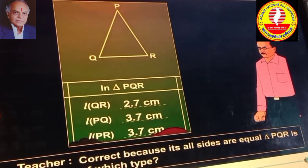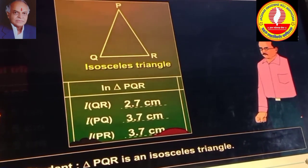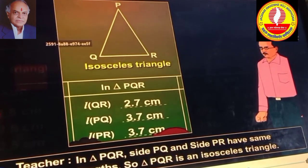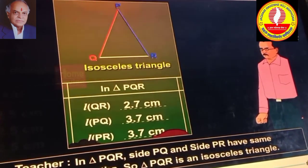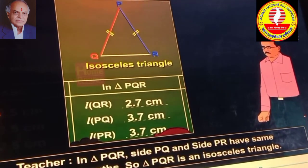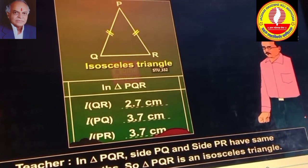Triangle PQR is of which type? Triangle PQR is an isosceles triangle. In triangle PQR, side PQ and side PR have same lengths. So, triangle PQR is an isosceles triangle.